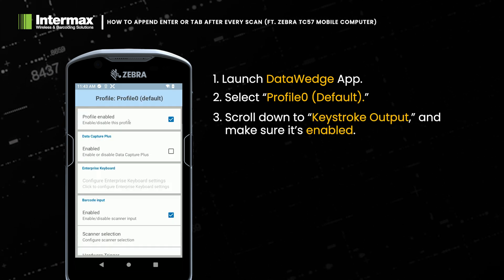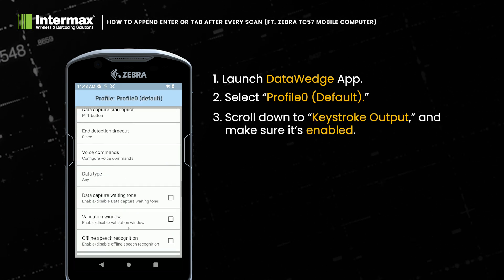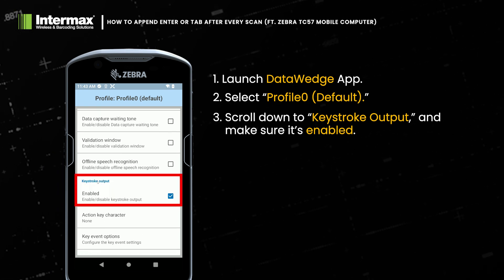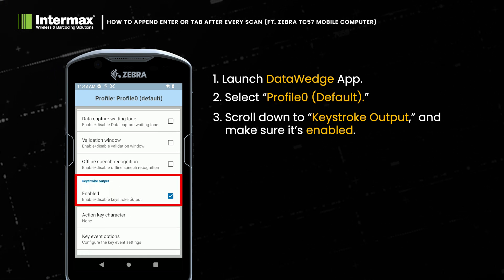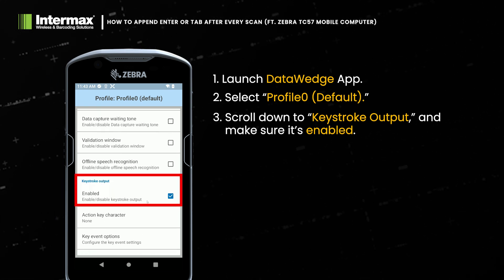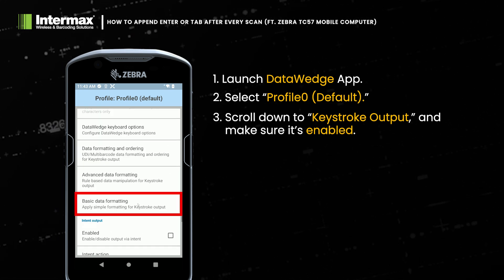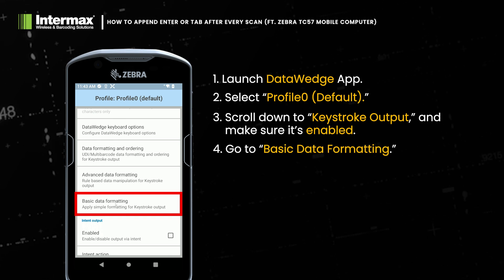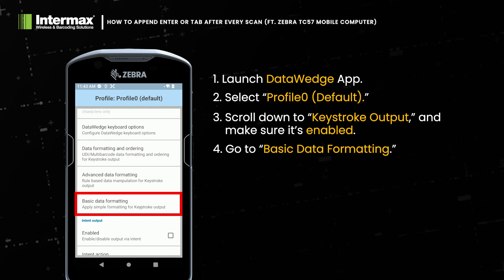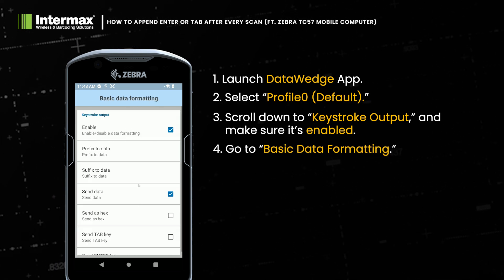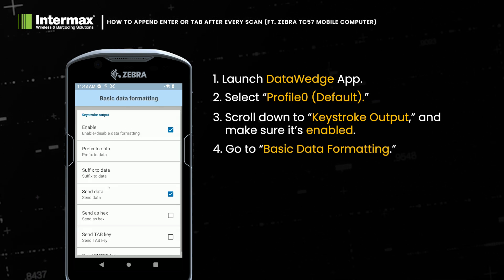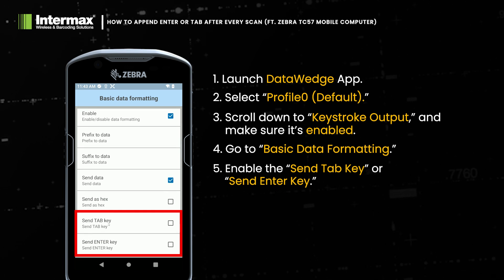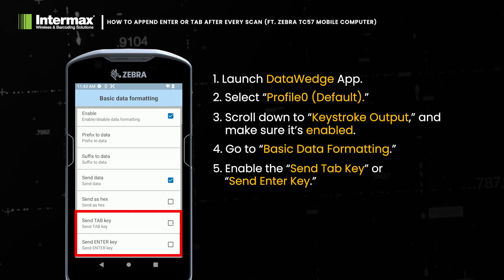Scroll down to the Keystroke Output option and ensure it is enabled. Then go to Basic Data Formatting and enable the Send Tab key or Send Enter key.